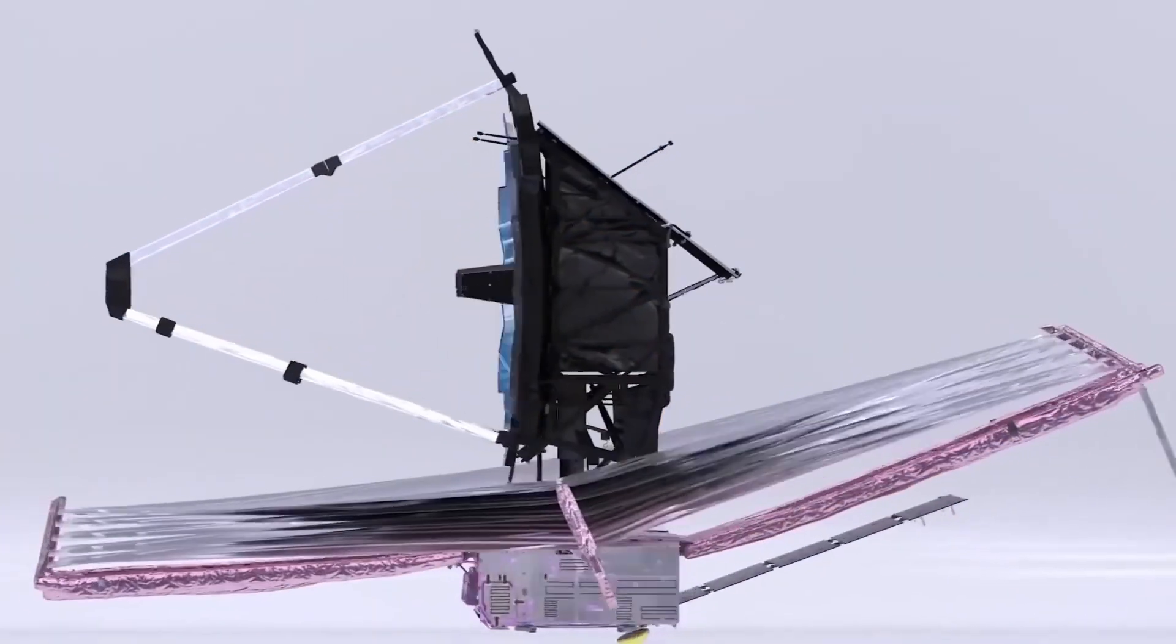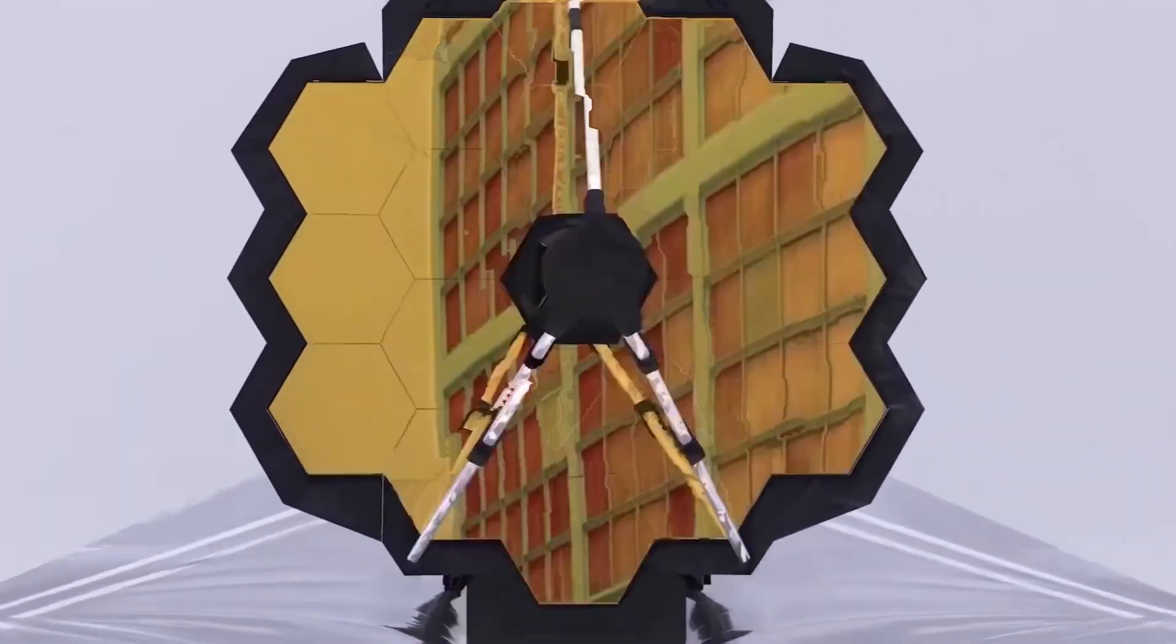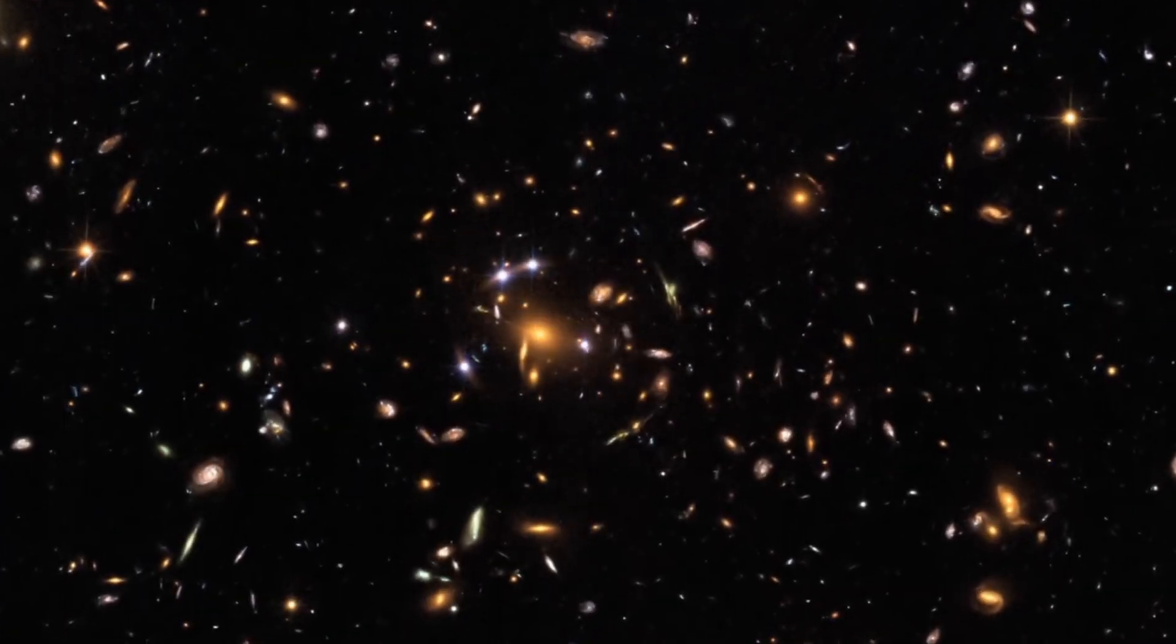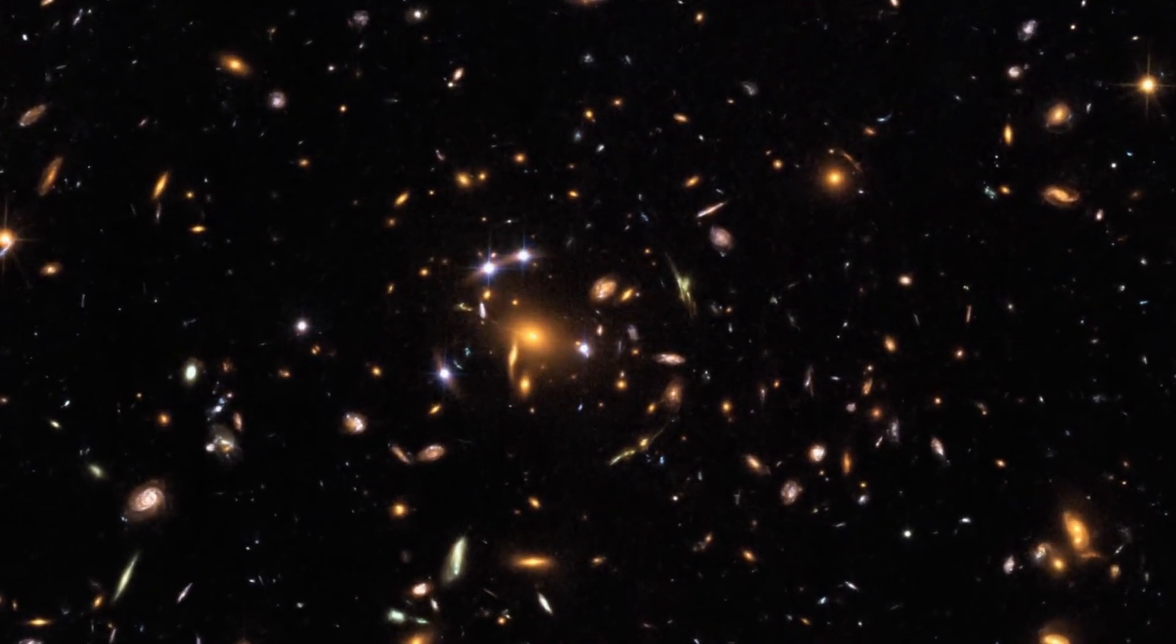This study is one of the first to take advantage of the capabilities of the James Webb Space Telescope and has already generated remarkable results. One of the most outstanding discoveries has been the identification of the fossil galaxy mentioned above. But what are the specific characteristics of this galaxy, and how has JWST measured them?